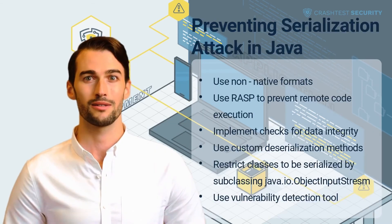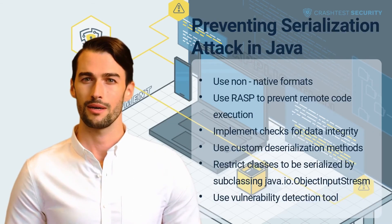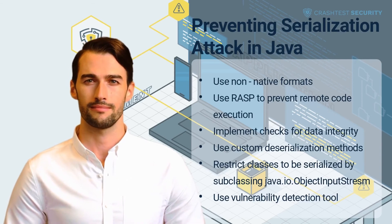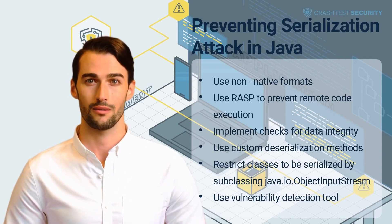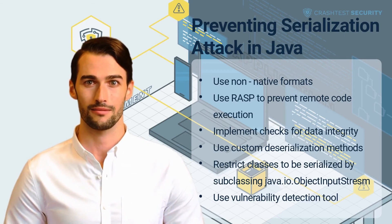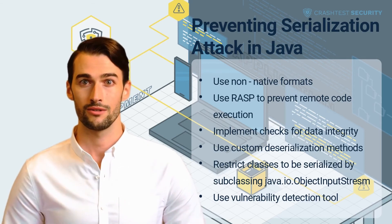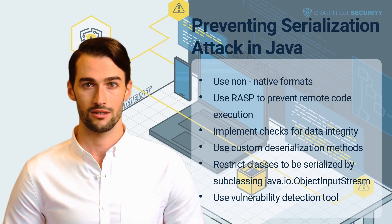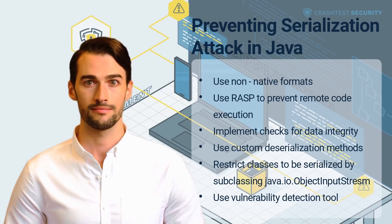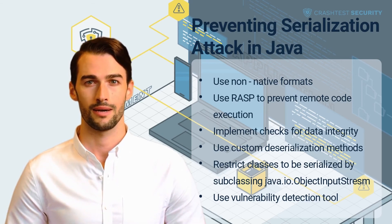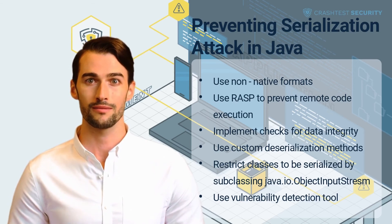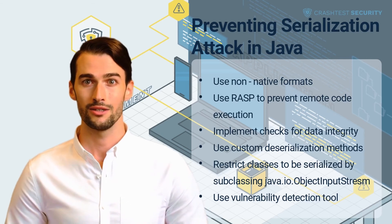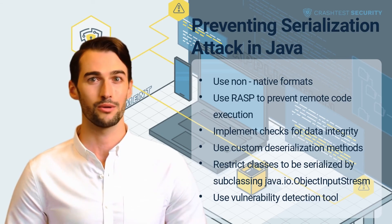Some best practices to prevent serialization vulnerabilities include the following. Use non-native formats: Developers should use standard data formats such as XML and JSON, eliminating the chances of attackers repurposing custom deserialization logic for remote code execution. These non-native formats implement a secure data transfer pattern that creates a separate serialization protocol for objects and state transfer, making the serialization algorithm unavailable to external entities.